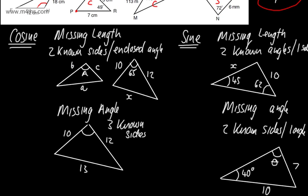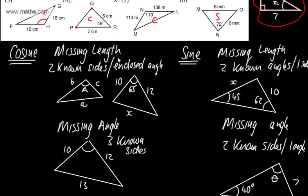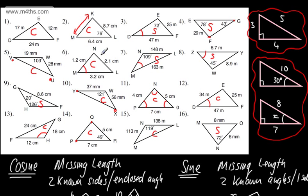In this video, we're going to work through some very basic examples of finding missing lengths and angles. In the next video, we're going to look at doing the same with the cosine rule, and then we will combine the two for more challenging problems in a later video. We'll also consider in a later video the ambiguous case for the sine rule. So let's go ahead and work through some basic problems.